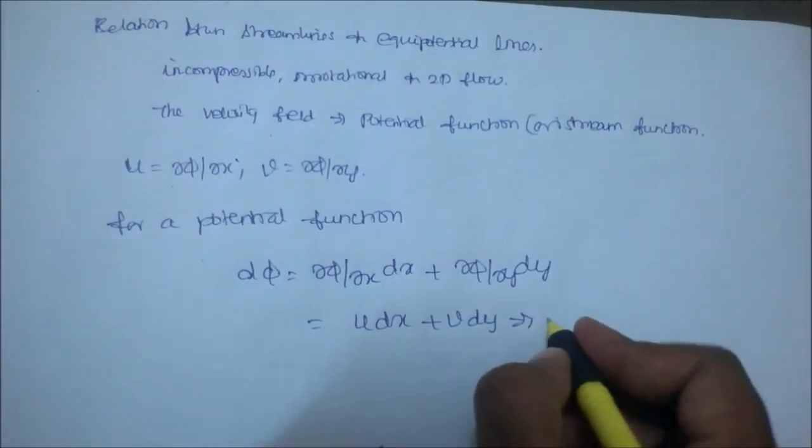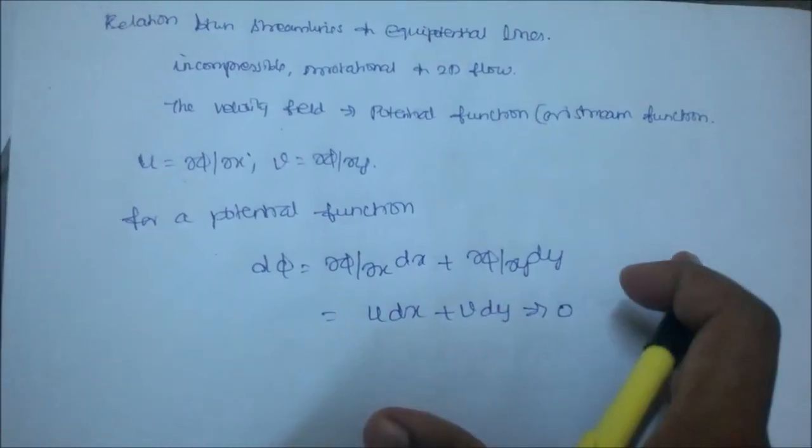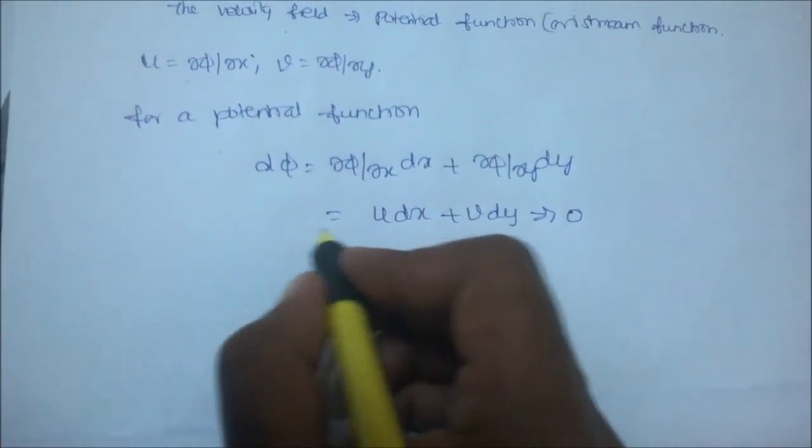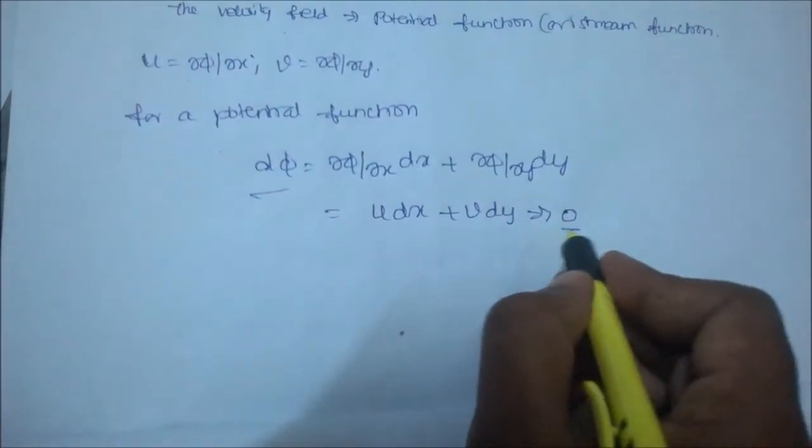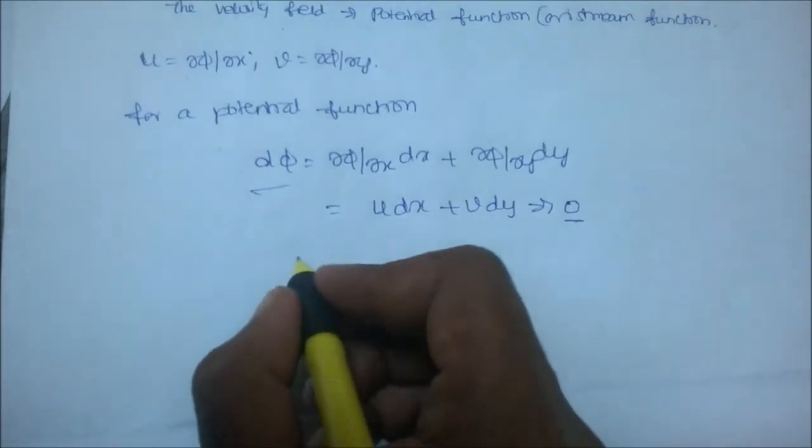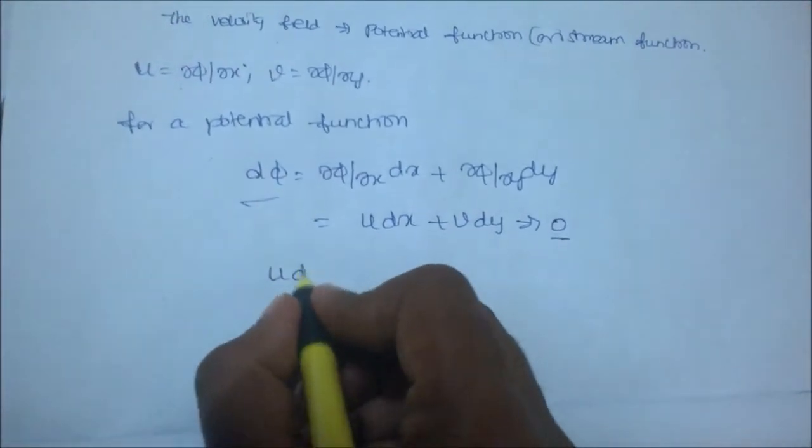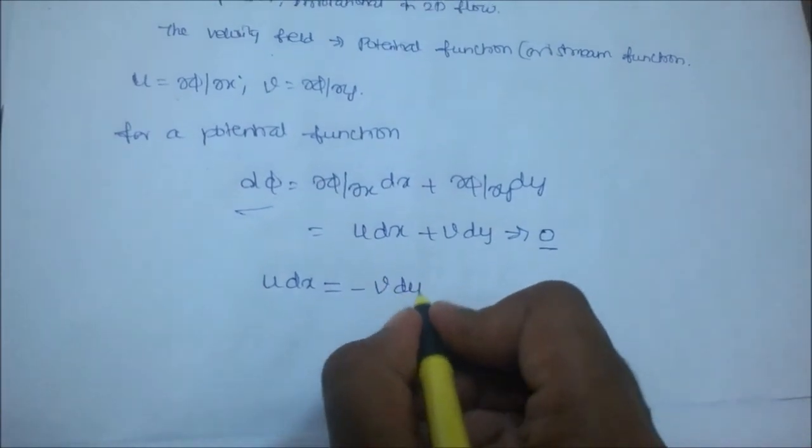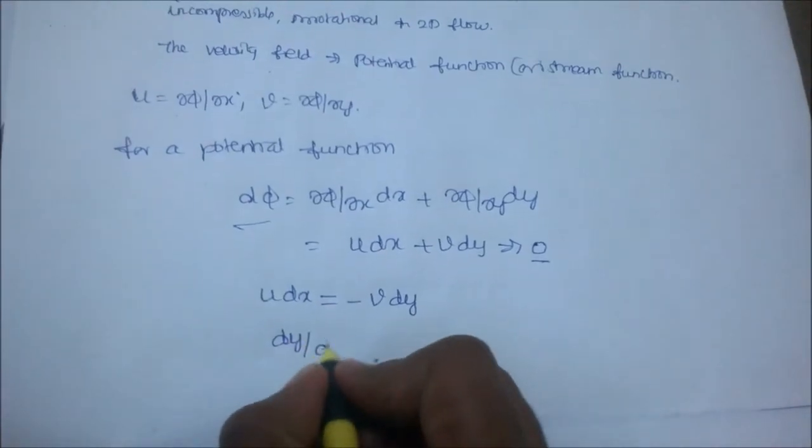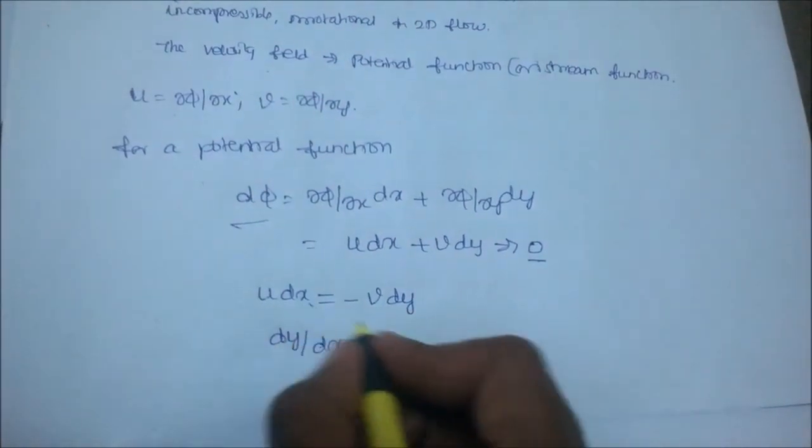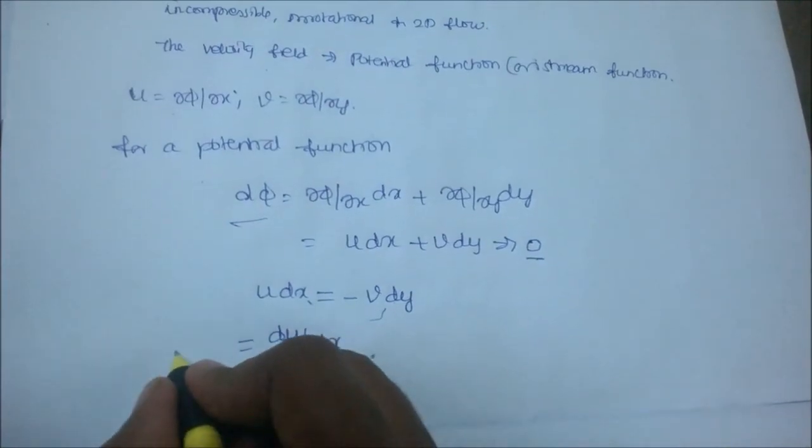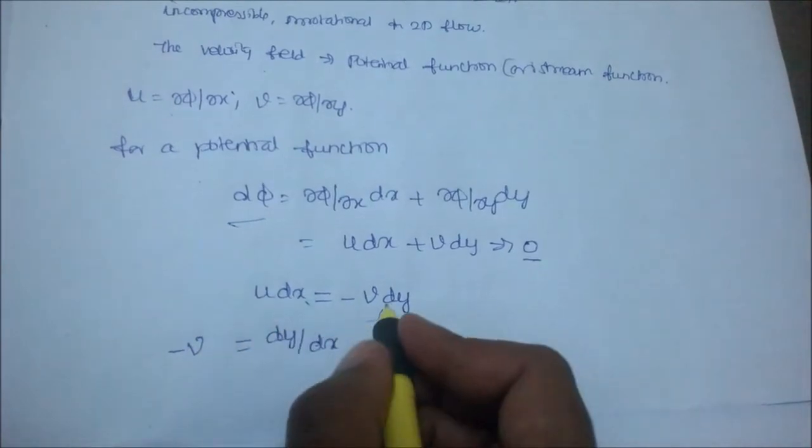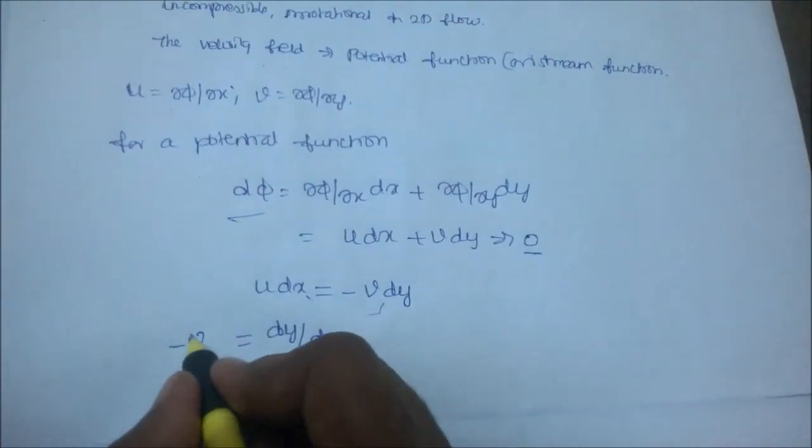Let us consider this term equal to zero. If dφ equals zero, then we can write u dx equals minus v dy. Then dy/dx equals minus u/v.